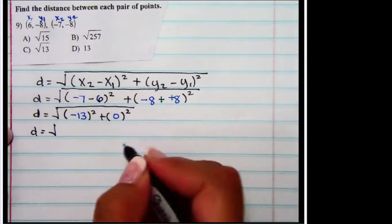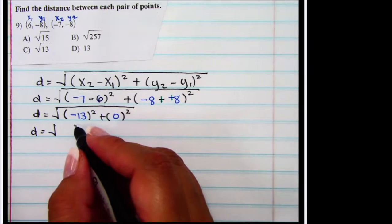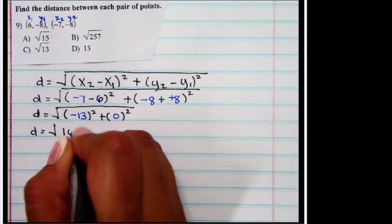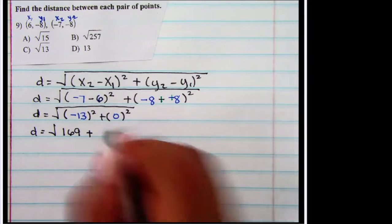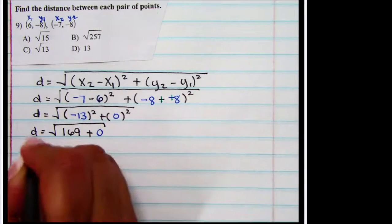Continuing my simplification, I have negative 13 squared. That's negative 13 times negative 13. My handy calculator says that that value is 169. 0 squared is 0. And so I'm going to write that in.